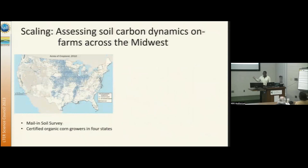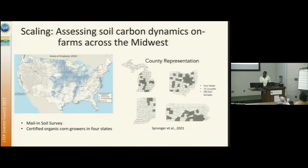We contact farmers from across the Midwest in the Eastern Corn Belt. They send us a management survey and a soil sample. For this specific project, we looked at certified organic corn growers across four states: Michigan, Ohio, Indiana, and Pennsylvania. We ended up getting a representative sample of 195 soil samples.